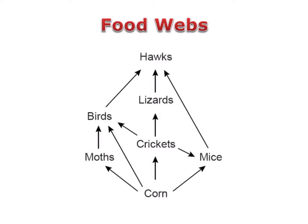Food webs also make it easier to see competitive relationships. For example, birds, lizards, and mice all eat crickets. This means that all of these populations have a competitive relationship over this food source. This can only be seen with food webs and isn't information that's provided by a food chain.